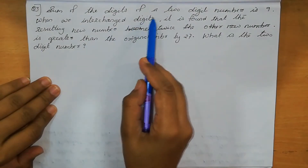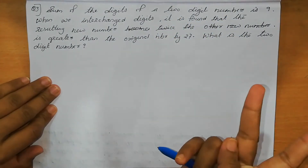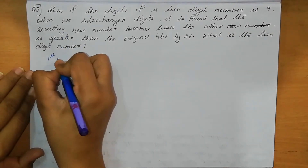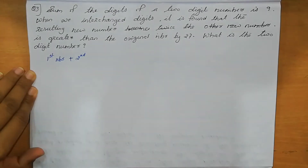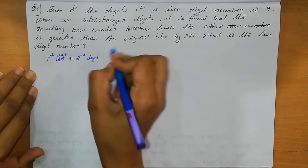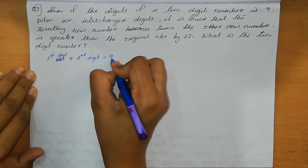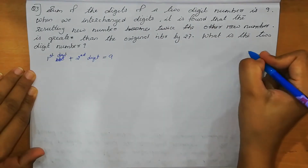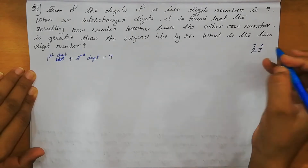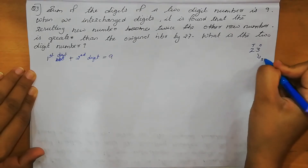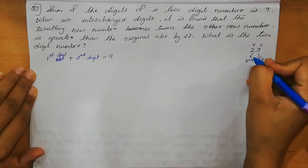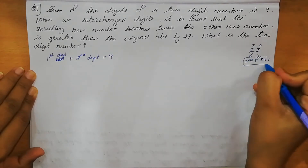Question number 3. Sum of the digits of a 2-digit number is 9. For example, take 23: 3 is in the 1's position, 2 in the 10th position. We write this as 2 times 10 plus 3 into 1, giving 20 plus 3 equals 23. So a 2-digit number is expressed as: 1's digit as it is, and 10th digit multiplied by 10.